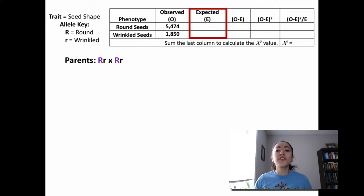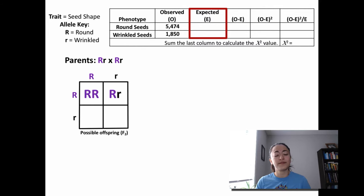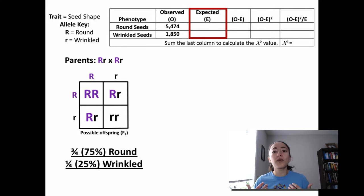Let's do a Punnett square for the two heterozygous parents in our example. From this Punnett square, we can see that we would expect three-fourths or 75% of the offspring to be round and we would expect one-fourth or 25% of our offspring to be wrinkled.